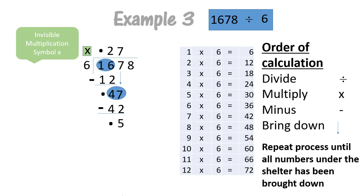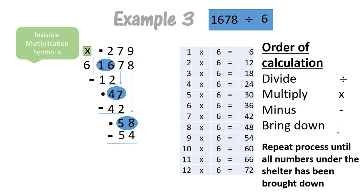Now we start the order of calculation again. Can six go into number five? No, it can't because five is smaller than six. We still have one more number left under our shelter and we bring down number eight. Now we have 58. Can six go into 58? Yes, it definitely can because 58 is bigger than six. And six goes into 58 nine times. Then we multiply: nine times six is 54. So we subtract: eight minus four equals four, and five minus five equals zero. We don't have any more numbers under our shelter, and we have a four at the bottom.